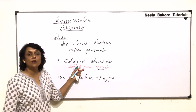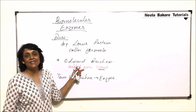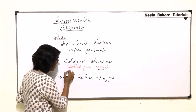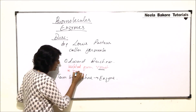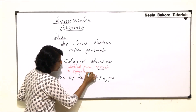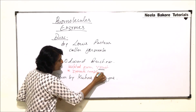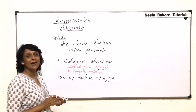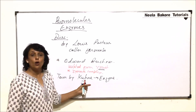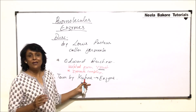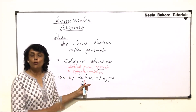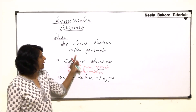When Buchner isolated it from yeast, he called it the zymase complex, because it is made up of three different enzymes as we now know. So, there are three scientists who played a very important role in the discovery of enzymes.